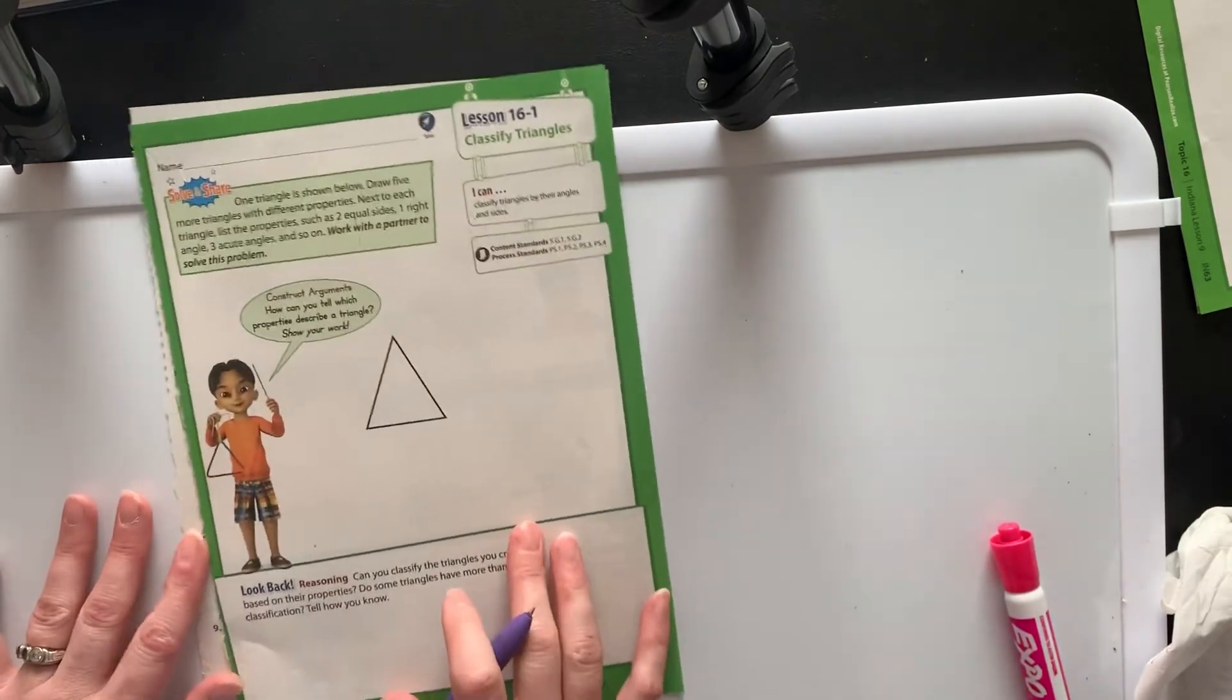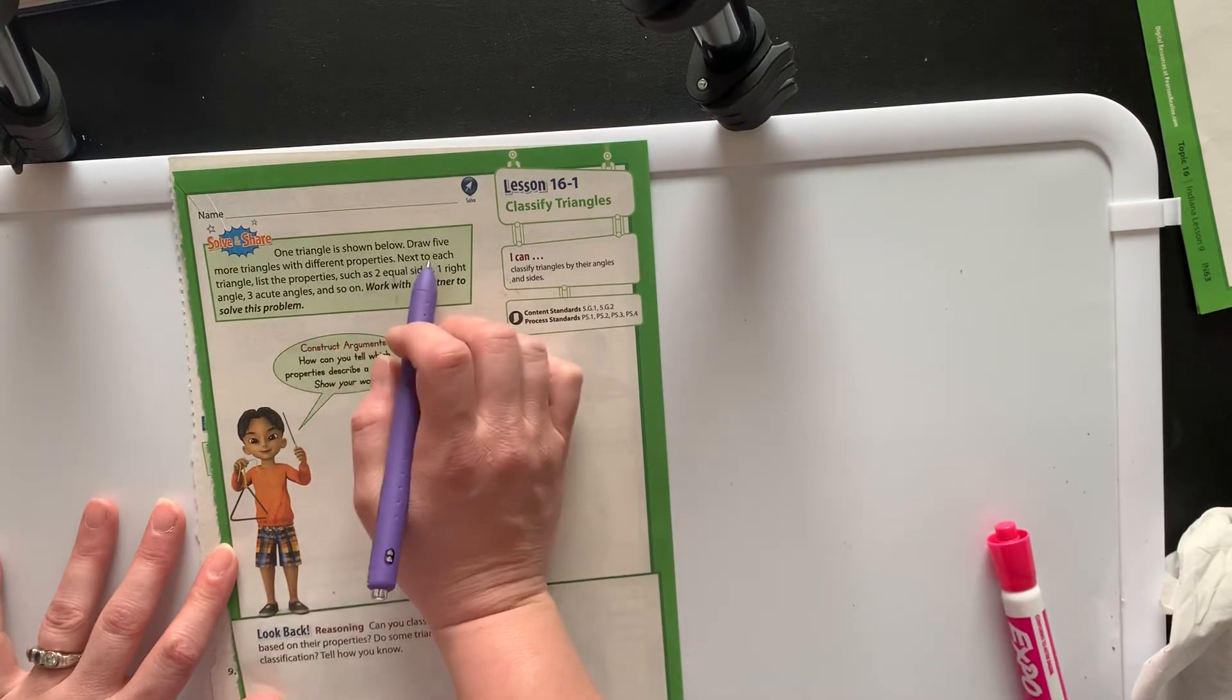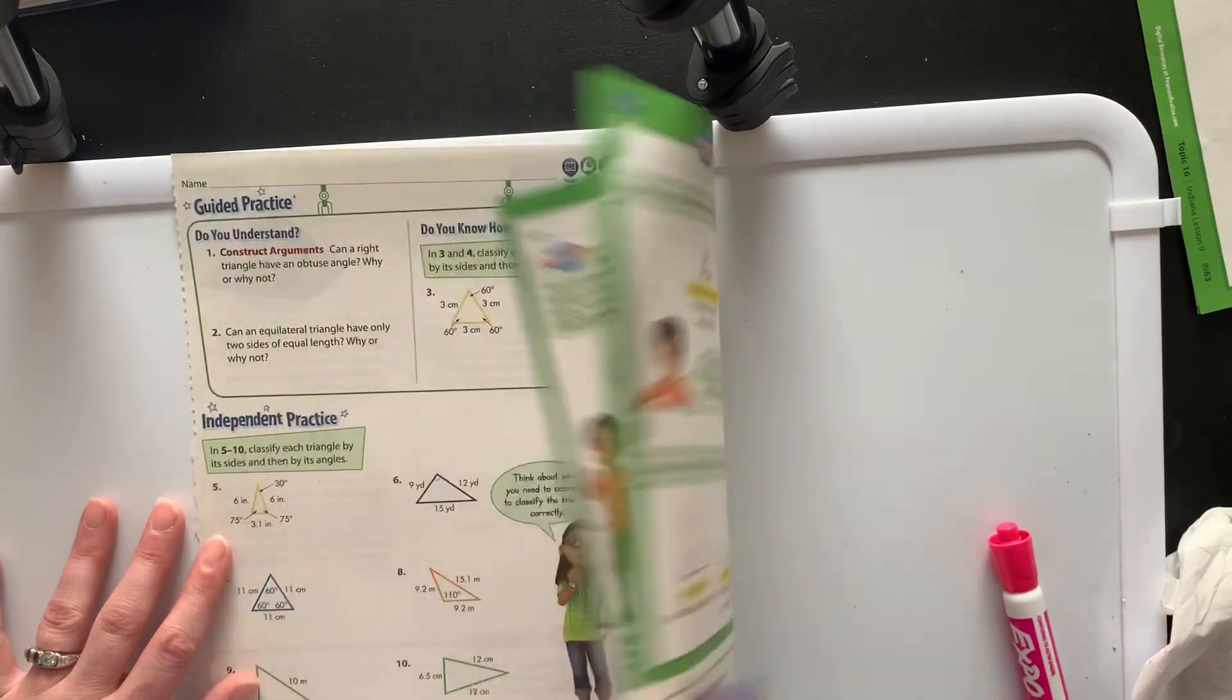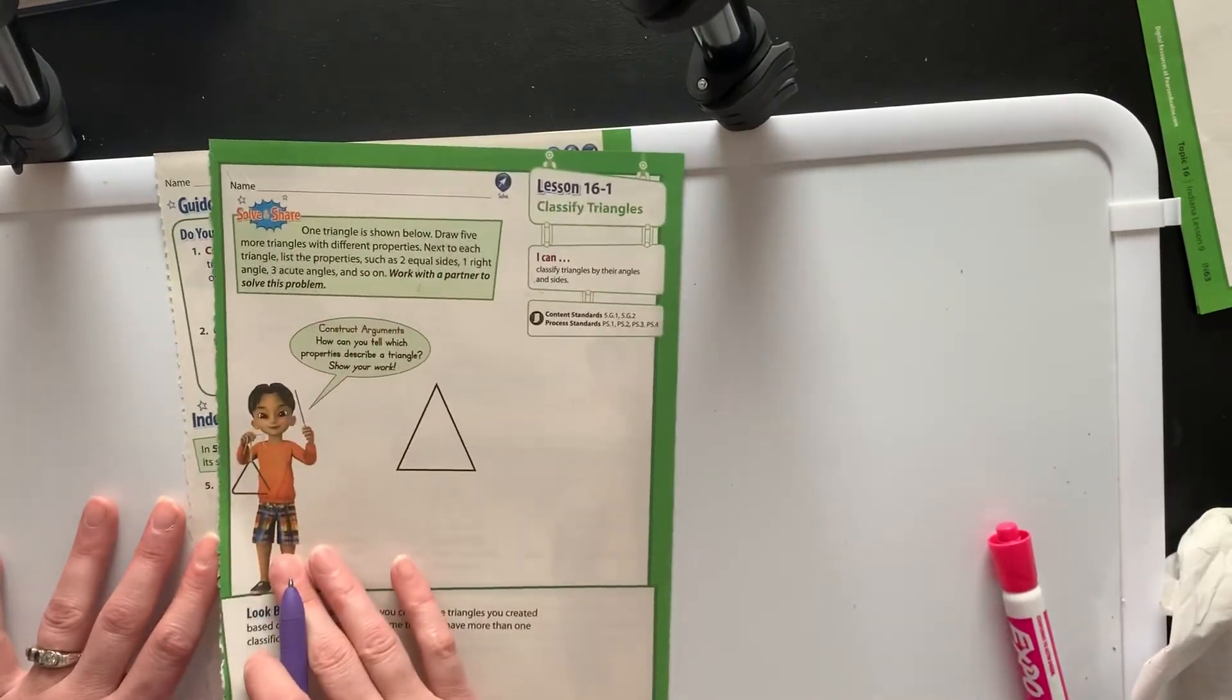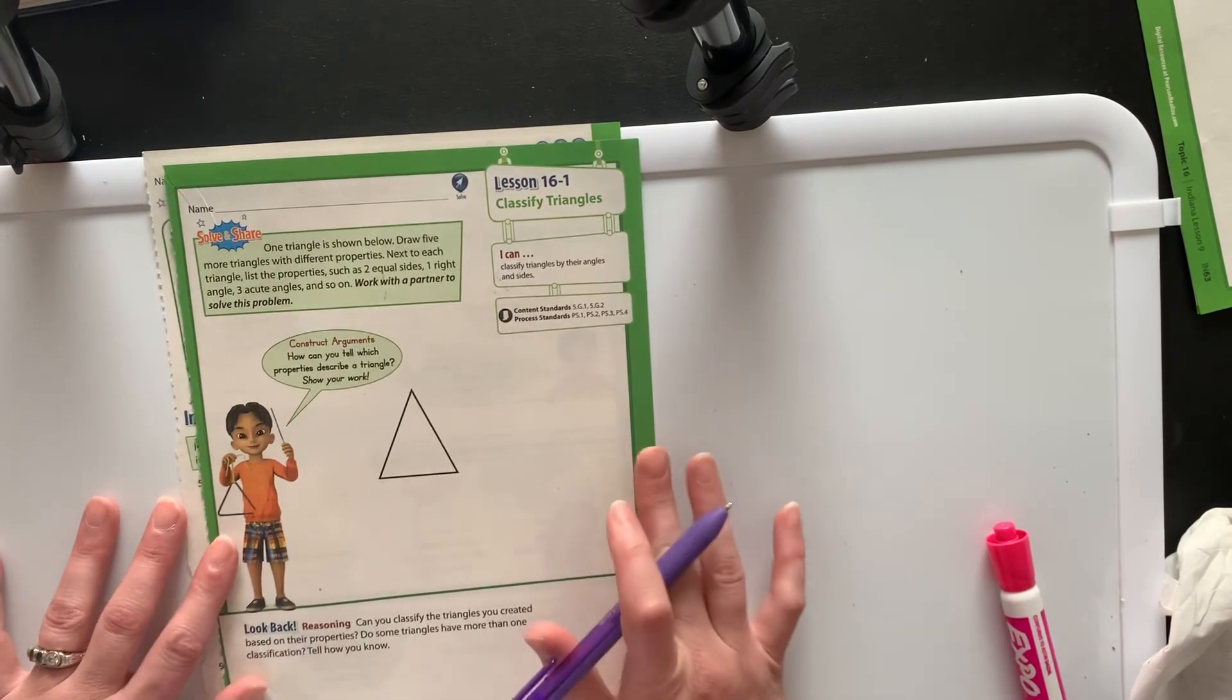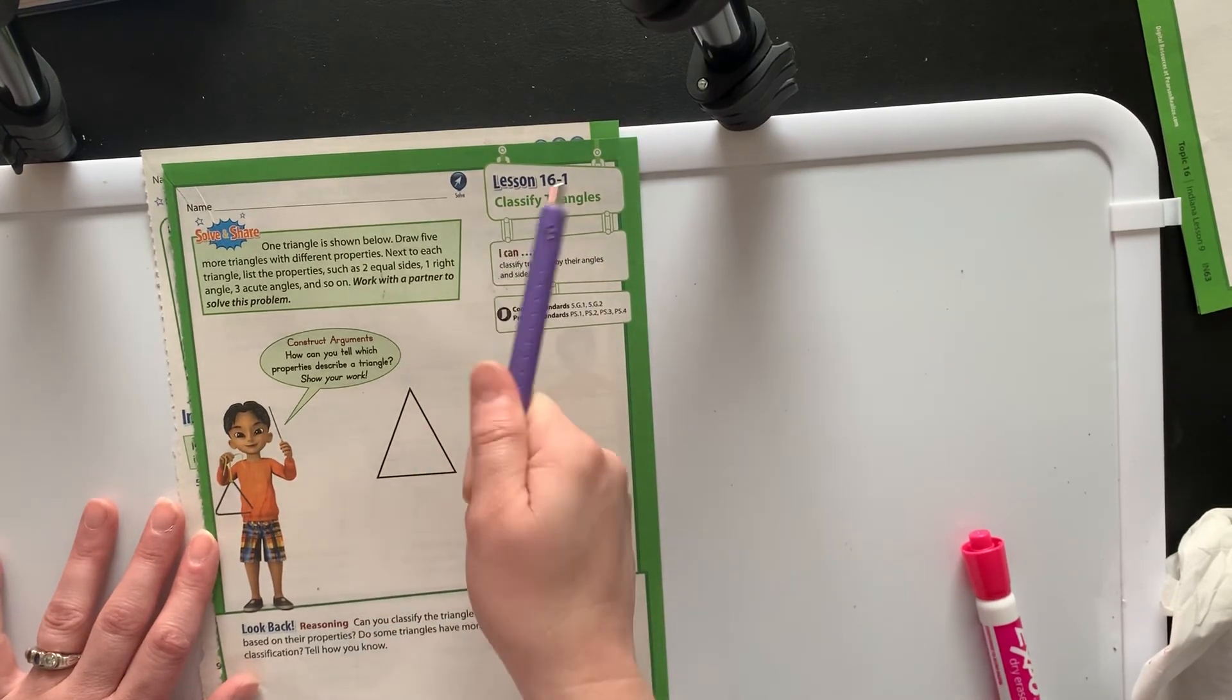So there is that. It says on the actual page right here, it says one triangle as shown below, draw five more triangles with different properties. You can do that if you want. Basically, it's just going to be all of these different types of triangles that you're going to be drawing there. So if you want to practice those, you can. And then you'll be ready to go on to our next lesson. So that is basic instruction for classifying triangles.